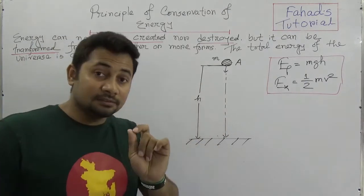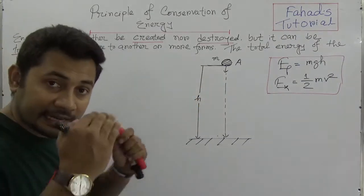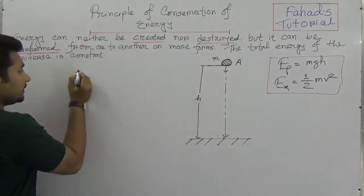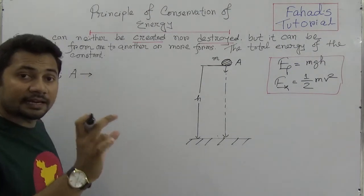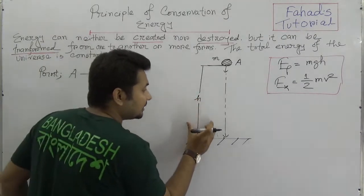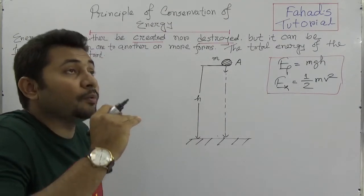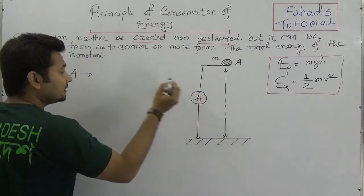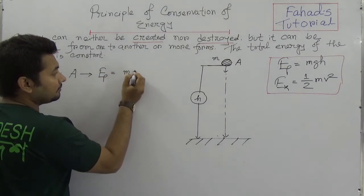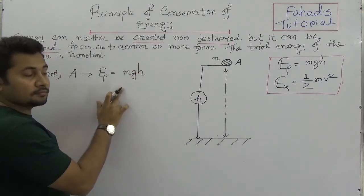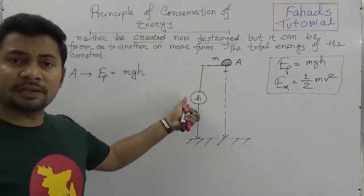At point A, all the energy is potential energy because the object is placed at height H. When we measure the potential energy, we consider which height it is placed at — here it is H. So the potential energy at point A is MGH, where M is the mass of the object, G is the acceleration due to gravity, and H is the height.